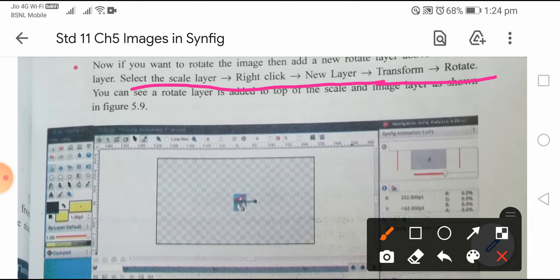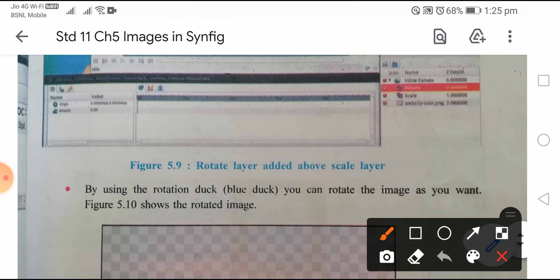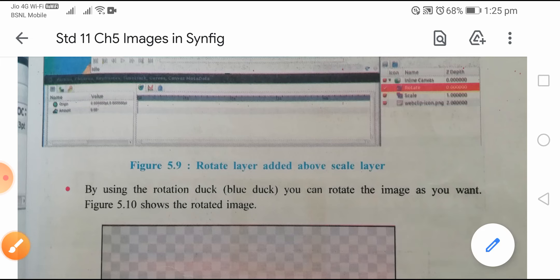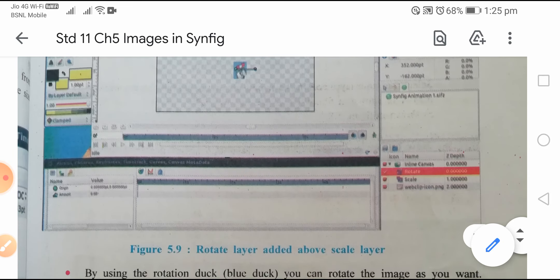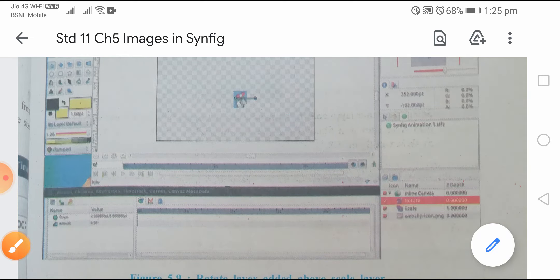You can see the rotate layer is added to the top of the scale and image layers. Now you will notice that the rotate layer is added above the scale layer. Figure 5.9 represents this. In this figure you will find one horizontal line added.